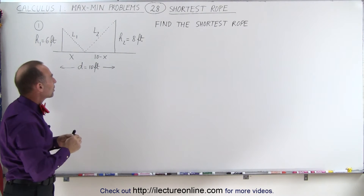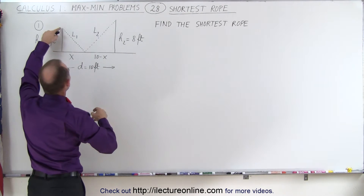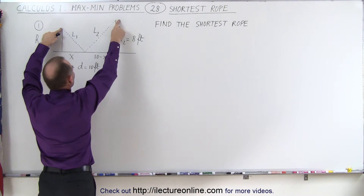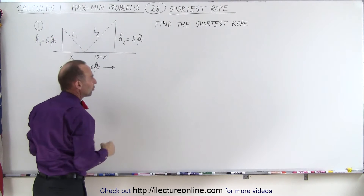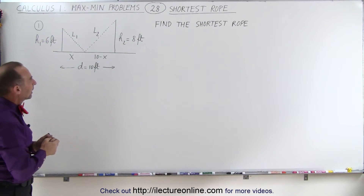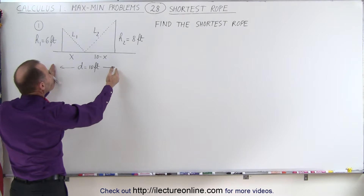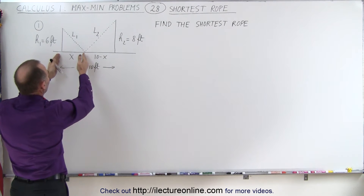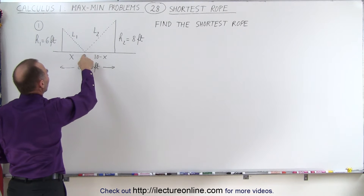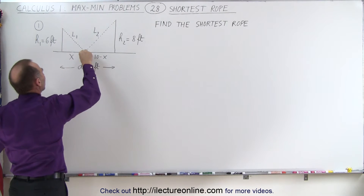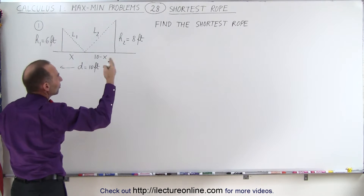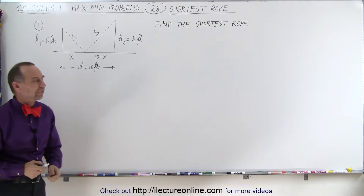What is the shortest string you can string up in such a way where you have it from the top of the first post to the ground to the top of the second post, assuming that you can make the string straight? If the distance between the posts is 10 feet, and we call this distance x and this distance 10 minus x, where do we put the rope on the ground? What's the distance x from the left post, and what is the length of the rope? Let's try to find that.